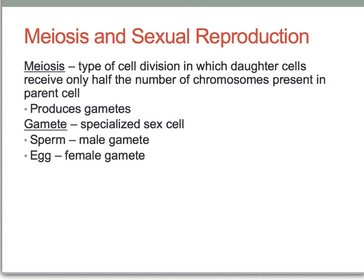Meiosis produces specialized sex cells called gametes. In animals, the male gamete is the sperm cell and the female gamete is the egg cell.